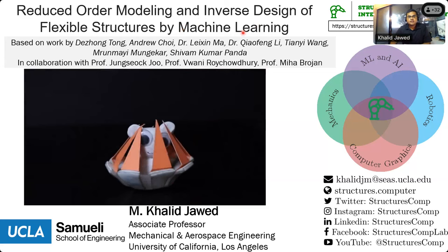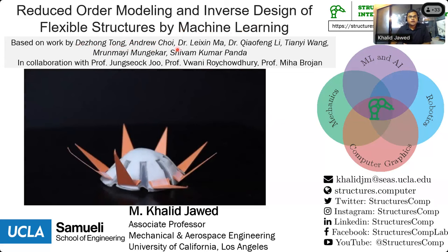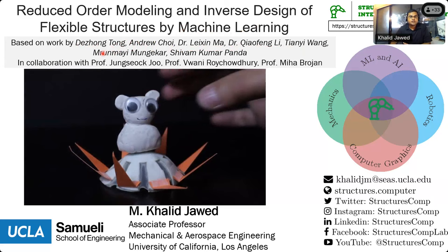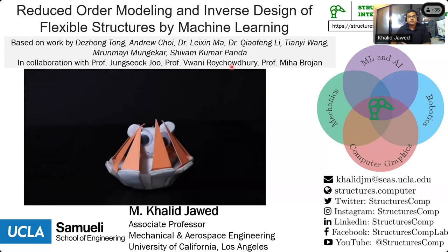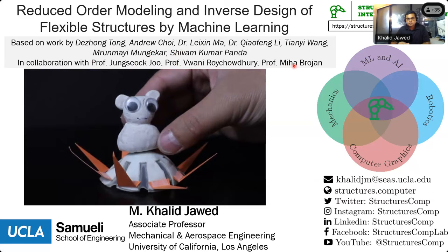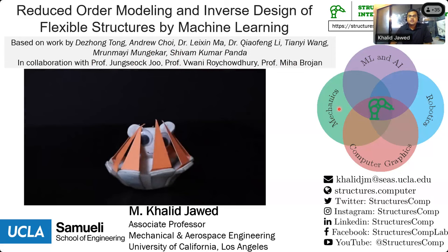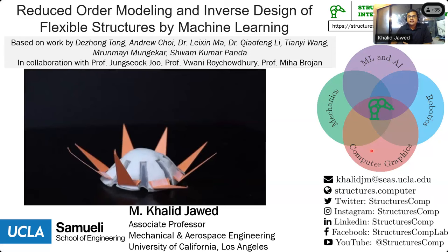Today I'll be talking about reduced order modeling and inverse design — forward simulations and backward design — using a combination of physics and machine learning. The content of my talk is based on work done by my students and postdocs: Andrew Chai; Leishin Ma, now an assistant professor at Arizona State; Cha-Fing Lee, now a postdoc at MIT; Tiani Wang, who joined industry last year; and Mrunmai Mungekar and Shivam Panda, both PhD students in my lab. This work was done in collaboration with Professor Jung-Suk-Ju and Bonnie Raichodri of UCLA, as well as Professor Miha Brohan of the University of Ljubljana in Slovenia. Broadly, the work in my lab is at the intersection of mechanics, robotics, machine learning, and computer graphics.